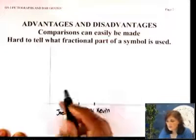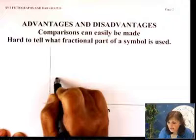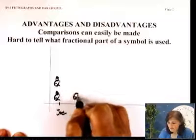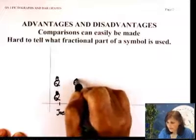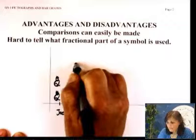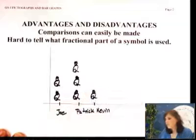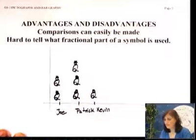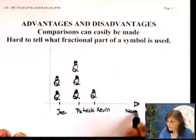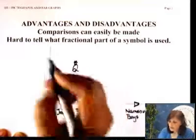Joe has two cats, and you can put a cat here and another cat — he is a cat boy. Patrick has three cats. Make sure you line them up, and you just have fun with this kind of problem. And Kevin has one cat. These are cats. You can label your axes: names of boys, and this one is cats.